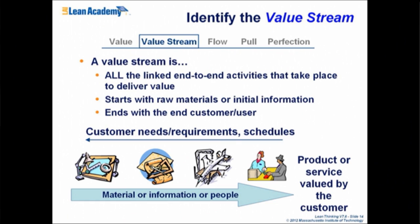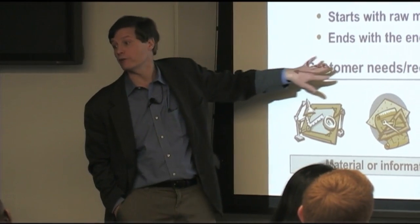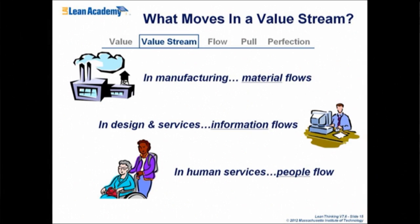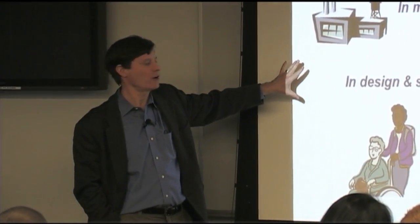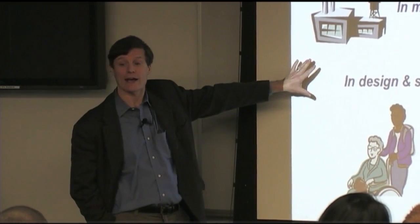Identifying the value stream. What is a value stream? It's the end-to-end activities that take place to deliver value, starting with the raw material or the initial information, ending with the customer or user. The material and product flows from beginning to end, and there's often a backwards flow of information — customer needs, schedules, inventory information. What moves in a value stream? In manufacturing, it's easy: stuff. In design and services, less easy — some kind of information flows. If I call up a helpline and want an answer, it's all information, not physical, which makes it a little harder to track.